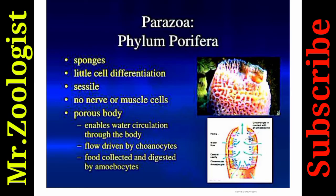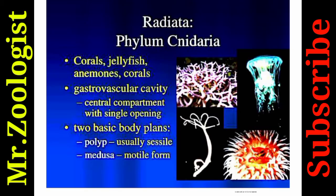Parazoa or Phylum Porifera — sponges — show little cell differentiation. They are sessile or fixed with no locomotor organs, no nerve or muscle cells. Their porous body enables water circulation, flow driven by choanocytes, and food is collected and digested by amoebocytes.